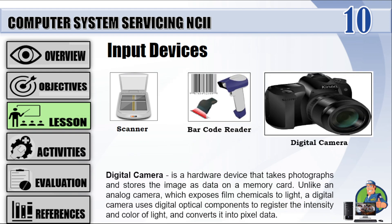Digital camera: A digital camera is a hardware device that takes photographs and stores the image as data on a memory card. Unlike an analog camera, which exposes film chemicals to light, a digital camera uses digital optical components to register the intensity and color of light and converts it into pixel data.